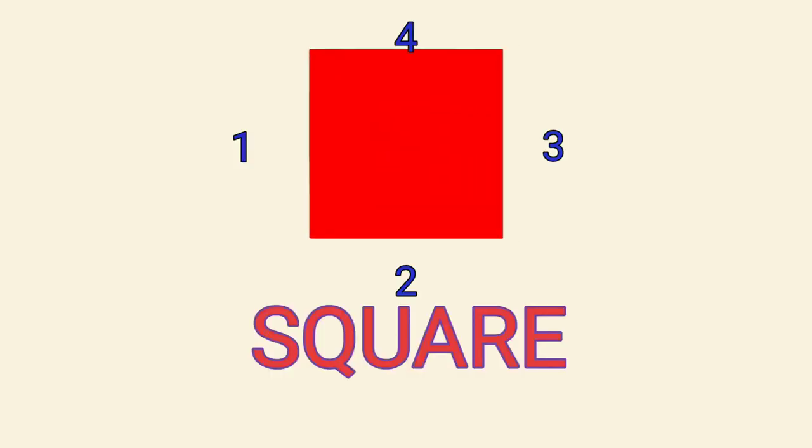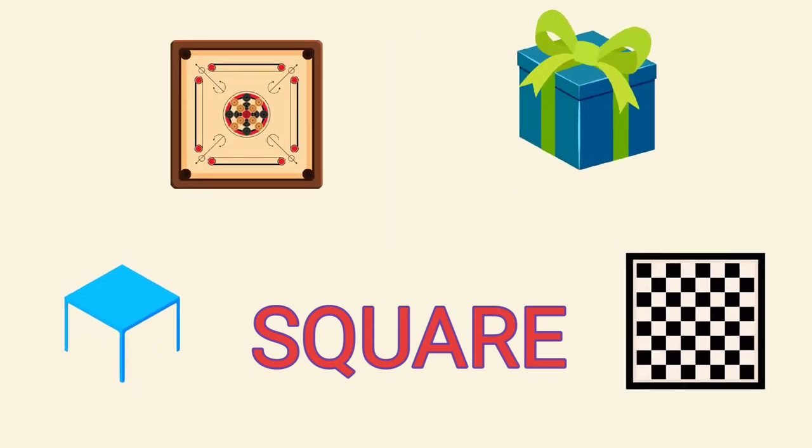Square has four sides. Examples: Carom board, Gift, Table, Chess board.